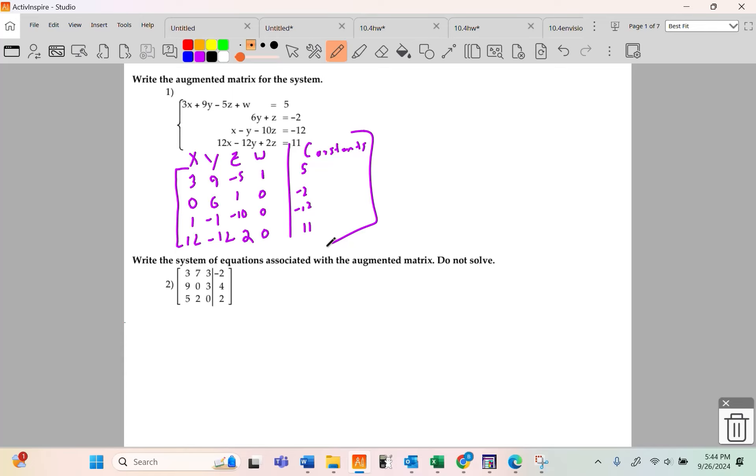Write the system of equations that are associated with the augmented matrix, do not solve. Well, your systems of equations don't need to mention the 0y or the 0z. They don't need to mention them because there's nothing there. And I don't perceive this being a big issue. Now, if this is an issue, you are in the wrong grade. Something needs to click. You need to mature a little bit more. Because this is just assigning x, y, and z to a number. There you go, equals 2. So hopefully everybody gets those right.